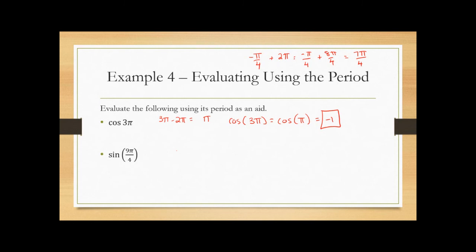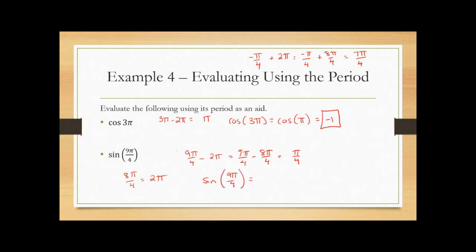The next example: sine of 9π/4. Since 8π/4 equals 2π, this is bigger than 2π. Subtract 2π — that's subtracting 8π/4 — which leaves π/4. So sine of 9π/4 is the same as sine of π/4, which we've now found multiple times, and that is √2/2.